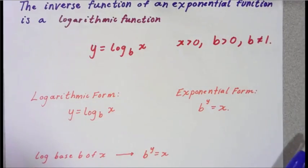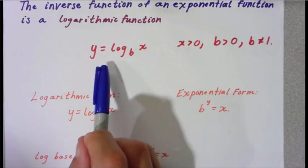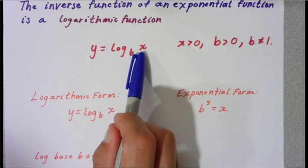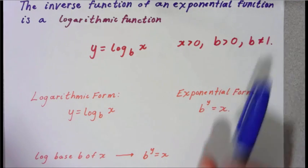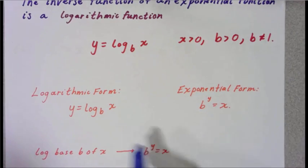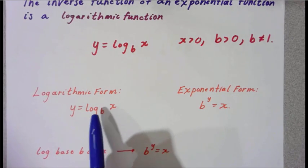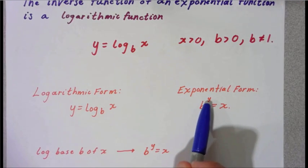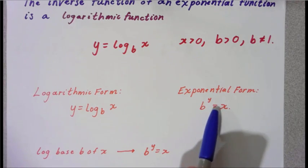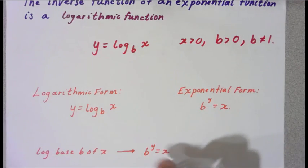The inverse function of an exponential function is called a logarithmic function. It's read as log base b of x, where x is greater than 0, b is greater than 0, and b cannot equal 1. Notice how the logarithm form relates to exponential form — the base of the exponential is the base of the logarithm. The logarithm is equal to the power of the exponent. Notice how this is b to the y equals x, because when we switch and do the algebraic form of an inverse, we have to switch x and y.